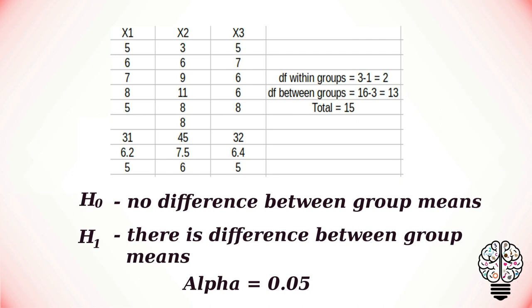Next we have to find the degrees of freedom within groups. For that we have to calculate the total number of values in each group, that is 16, minus the total number of groups, that is in our case three. So the degrees of freedom within groups equals 13.